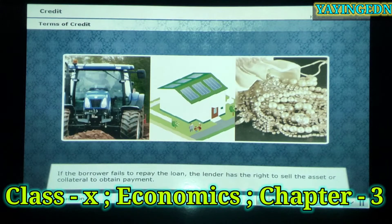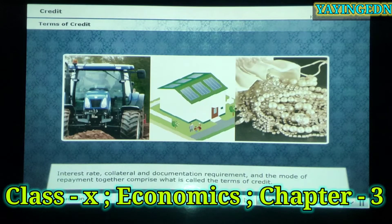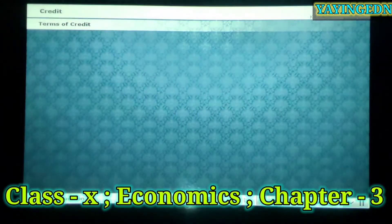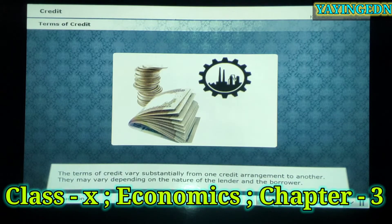If the borrower fails to repay the loan, the lender has the right to sell the asset or collateral to obtain payment. Interest rate, collateral and documentation requirement, and the mode of repayment together comprise what is called the terms of credit. The terms of credit vary substantially from one credit arrangement to another, depending on the nature of the lender and the borrower.